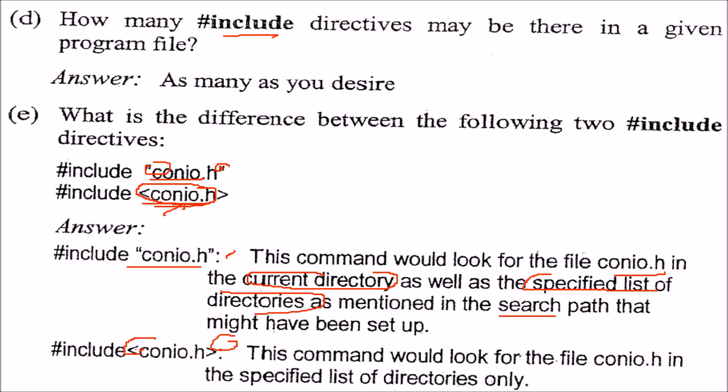When you use angle brackets, this command would look for file conio.h in the specified list of directories only. So specified list of directories in this case, versus specified list of directories plus the current directory.